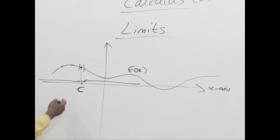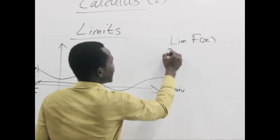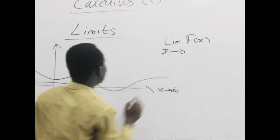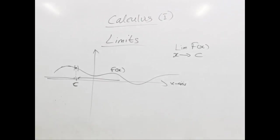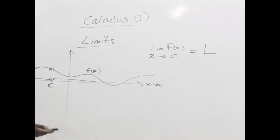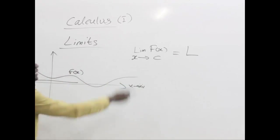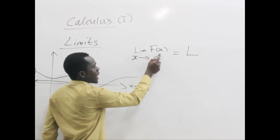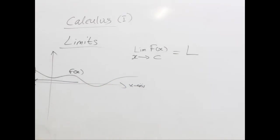Mathematically, we write the limit of a function as it approaches a particular number on the x-axis. We write: the limit of f(x) as x approaches c equals L. We read this as: 'the limit of f(x) as x approaches c is equal to L.' So L represents the behavior — where the behavior of the graph is leading us to.